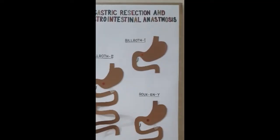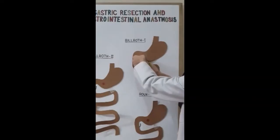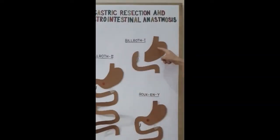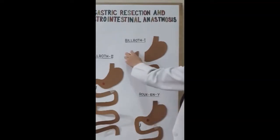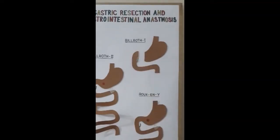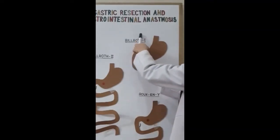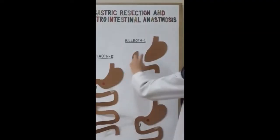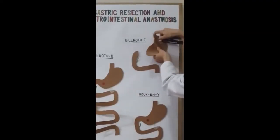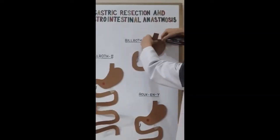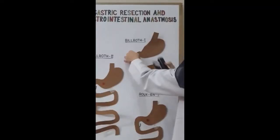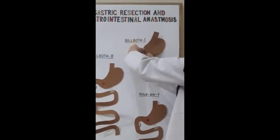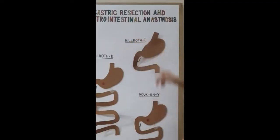So in Billroth 1, we do the resection of the tumor, then we mobilize the stomach and the duodenum and do the anastomosis. For the anastomosis, this is the larger side — you have to reshape the lesser curvature of the stomach, suture that end, then mobilize both the stomach and the duodenum and perform the anastomosis. This is the Billroth 1 gastroduodenal anastomosis.